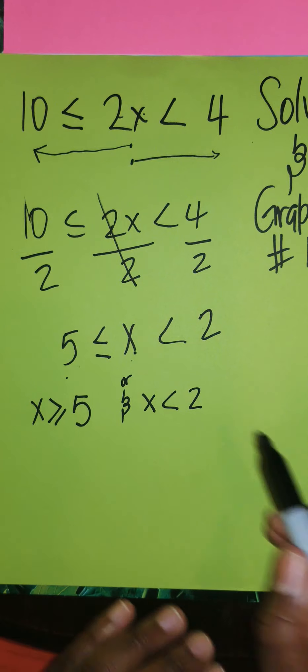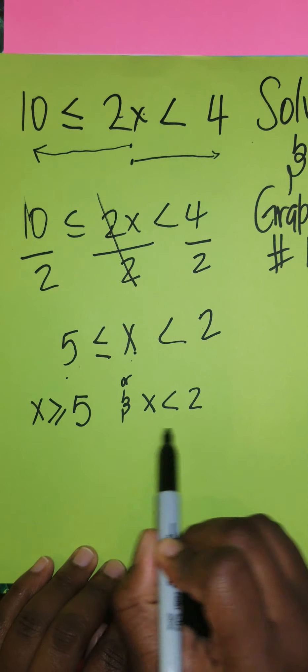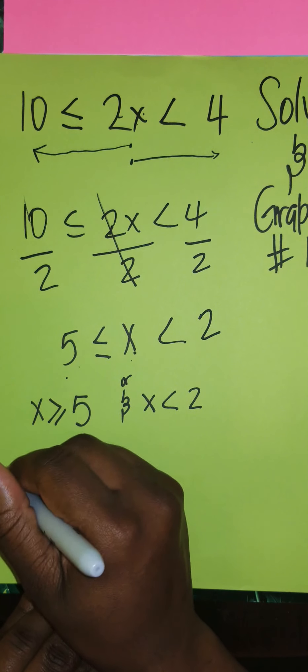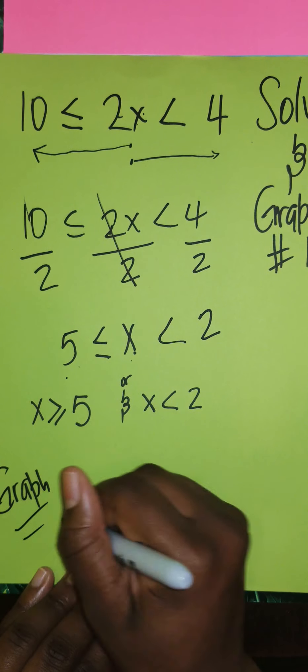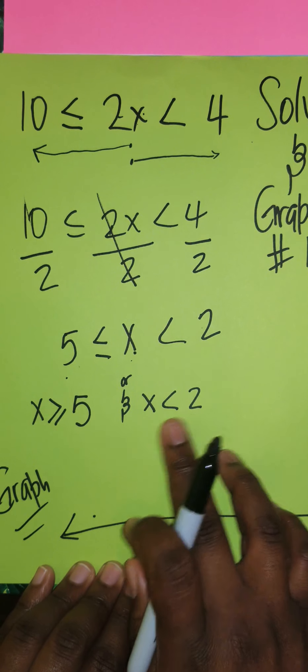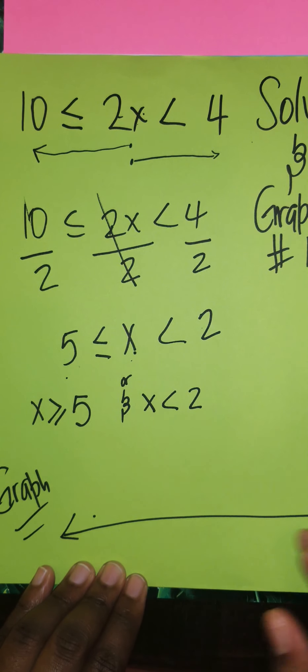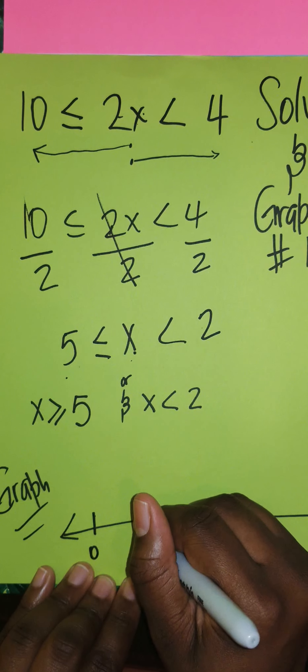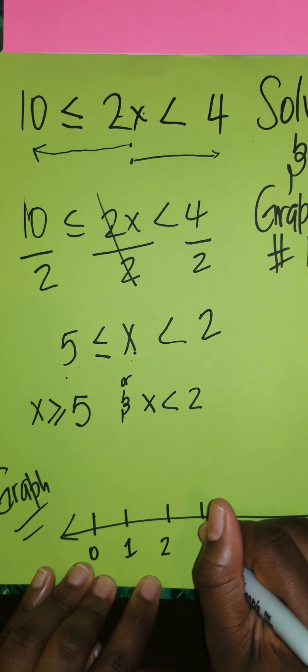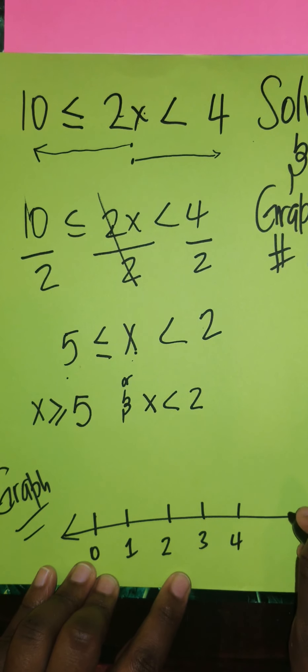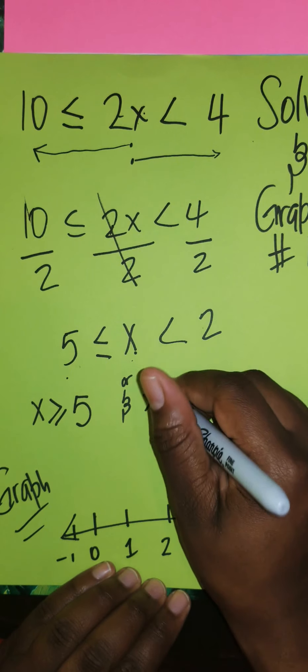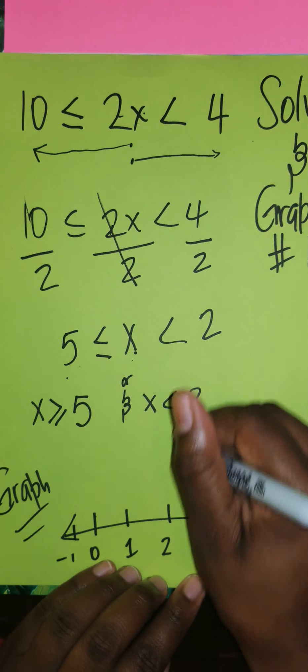From here you're going to be asked to graph it on the number line. As you know, I'm going to identify 5 and 2 instead of 0, 1, 2, 3, 4, 5. So that's my 0, and you have the negative on that side. I'm going to find 5, I'm going to find 2.